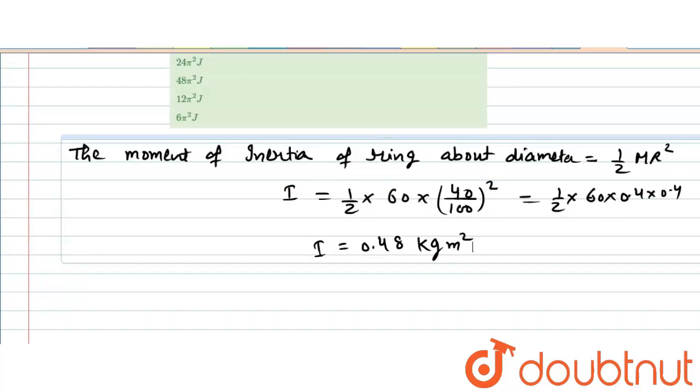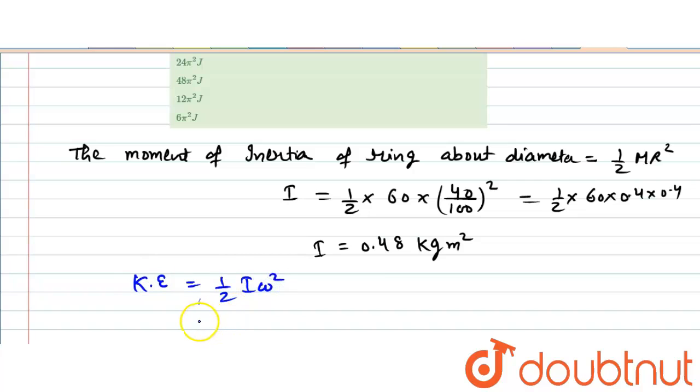And now, we have to find out the kinetic energy of rotation that is equal to half i omega square which is equal to half into i that is 0.48 into omega is 300 rotation per minute. So, it will be into 2 pi divided by 60, omega will become in terms of radian per second square, whole square.